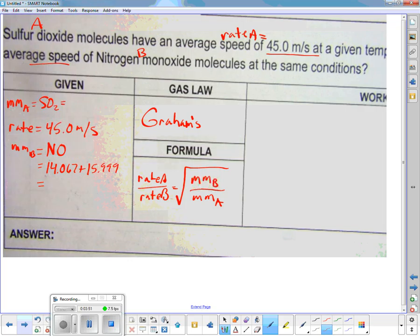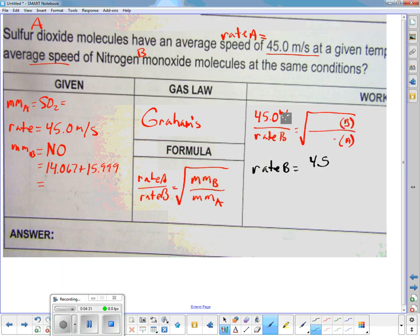Then over here we're looking for rate B. So we're going to put in 45.0 meters per second over rate B equals square root of B over A. Put your numbers in, square root this side, and then times both sides by rate B and divide by this. So basically your rate B equals 45.0 meters per second divided by the square root of whatever you had for B over A. The units should be meters per second because you're looking at rate.